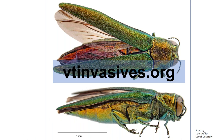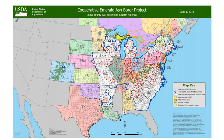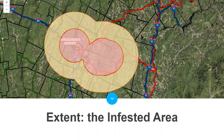Here is EAB — this is the pest. This is our current North American extent of the infestation: there are 34 states and four Canadian provinces currently infested, and every red dot on this map is a confirmed infestation site in Vermont.